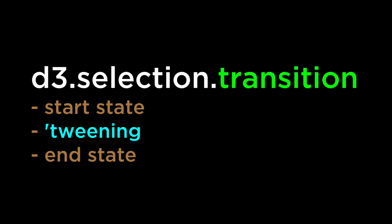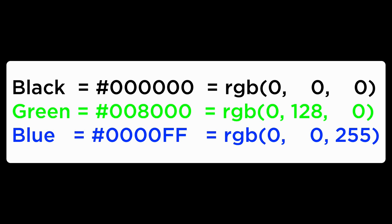In D3, unless otherwise specified, the start state is the current state of the DOM element. In the motivating example, the start state of the text was the color black and the end state was the color green. The second time we ran the transition, the start state was the current state of the DOM element, which was green, and the end state was the color blue. D3 created a smooth animation where the color transitioned from black to green, then another smooth animation from green to blue.